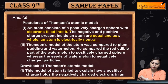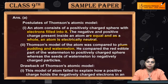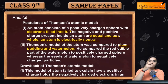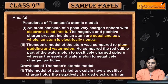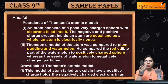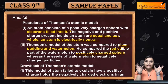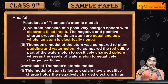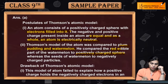Thomson's model of the atom was compared to plum pudding and watermelon. In a watermelon, the red edible part represents the positively charged sphere, and the seeds represent the electrons embedded within it. Similarly, in the model, the positively charged sphere is large, and the negatively charged electrons are like seeds present within it.